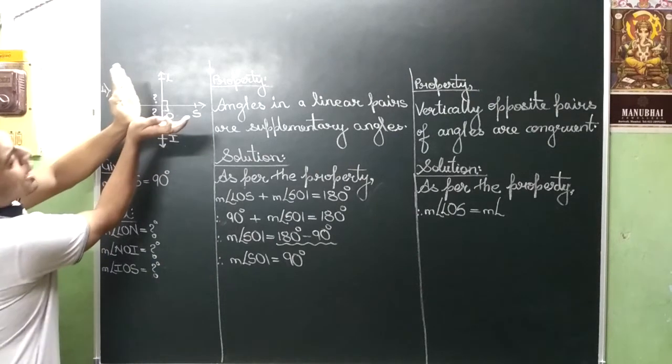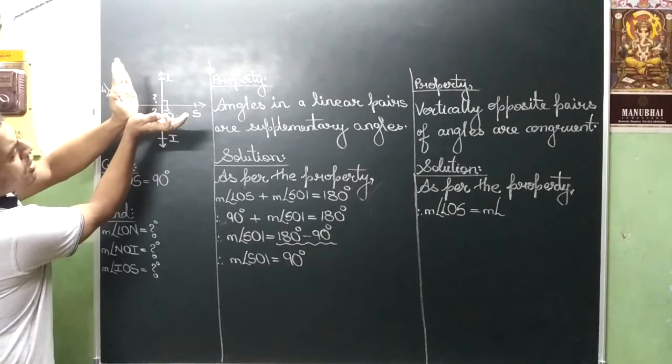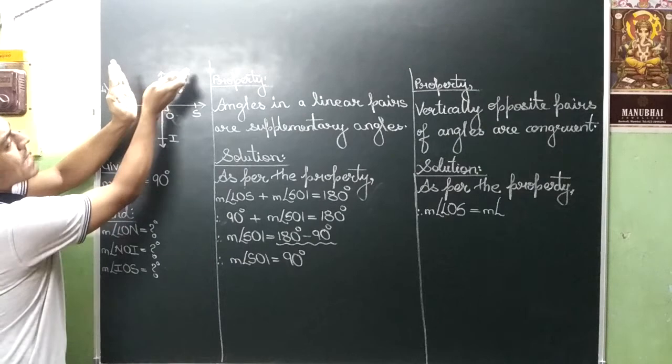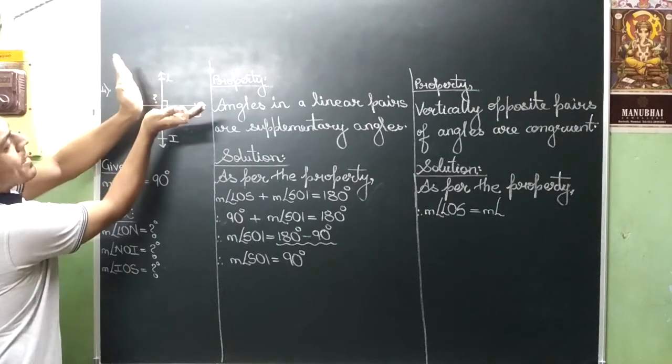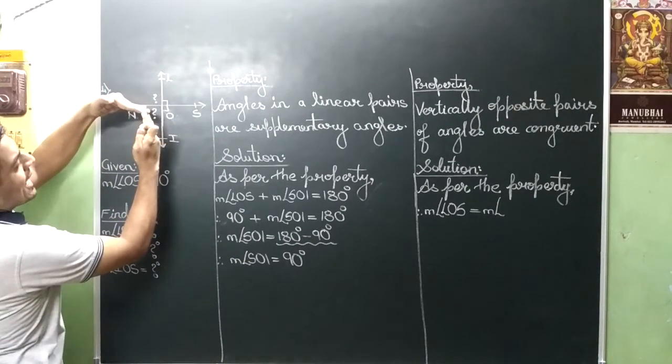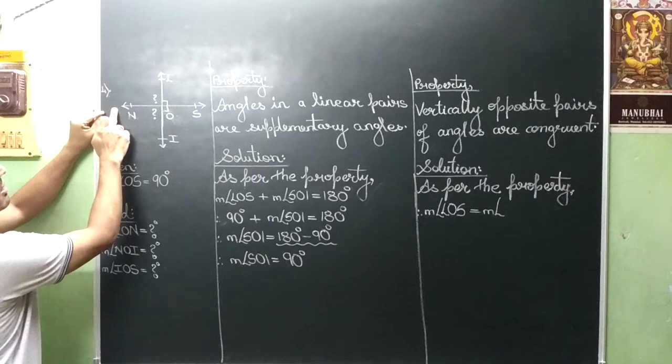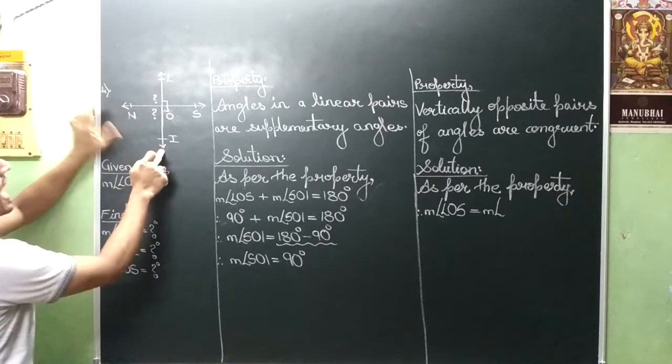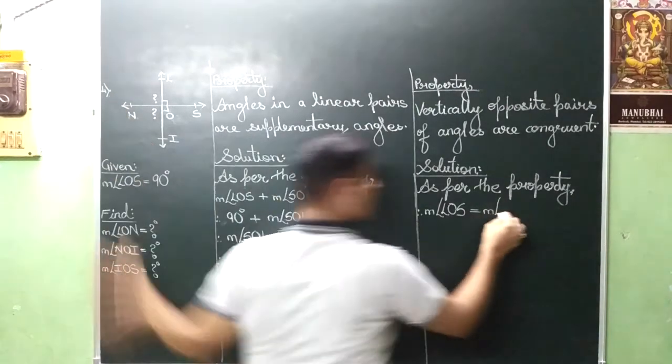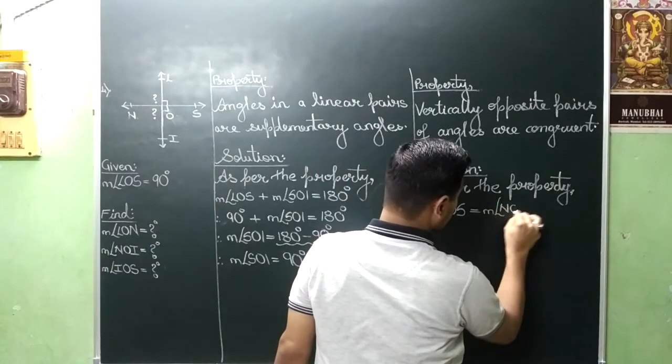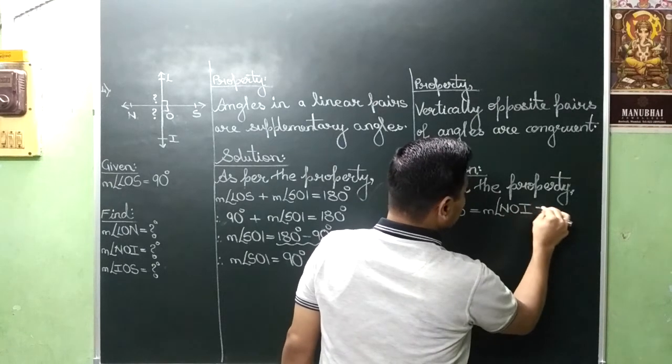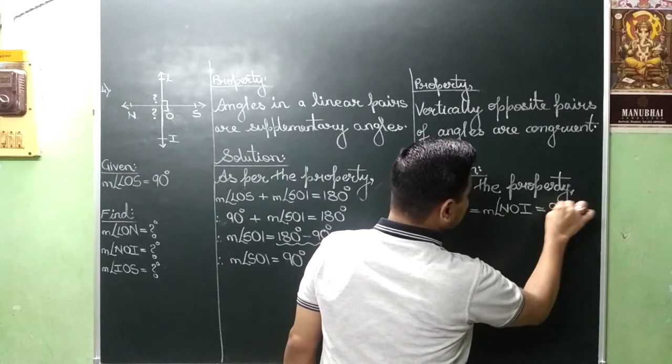Ye peta aap ne ko is taraf hai. That is on your right hand side top. So aap right ka opposite ho jaega left on your bottom net. That is NOI. This angle. And it will be of 90 degree.